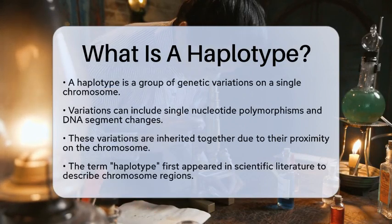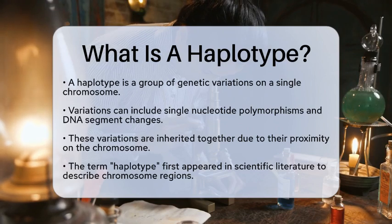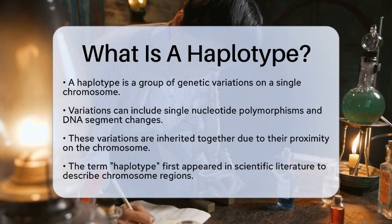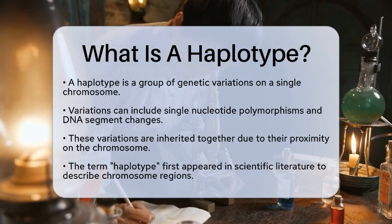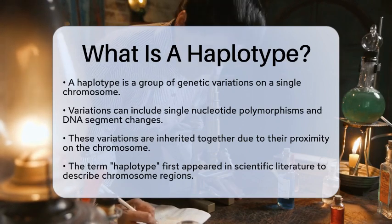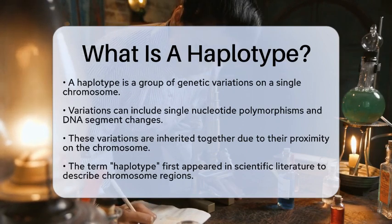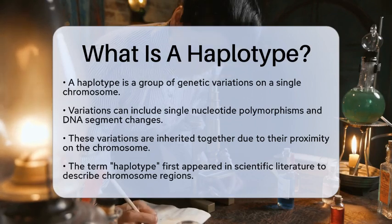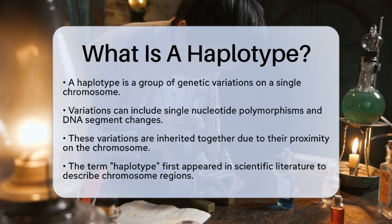A haplotype is a group of genetic variations that are located close together on a single chromosome. These variations can include single nucleotide polymorphisms, which are tiny changes in the DNA sequence, or insertions and deletions of DNA segments. Because these variations are linked, they tend to be inherited together from one generation to the next.